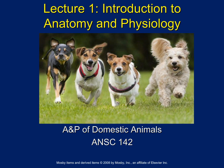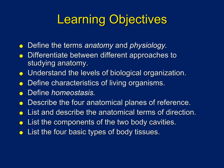After you complete today's lecture, you should be able to define the terms anatomy and physiology. You should be able to differentiate between different approaches to studying anatomy — for example, microscopic anatomy versus macroscopic anatomy. You should understand the different levels of biological organization, going from atoms to cells to tissues and all the way up to the organism. You should be able to define the characteristics that define all living organisms, and also define the term homeostasis, as it's very important to understand physiology.